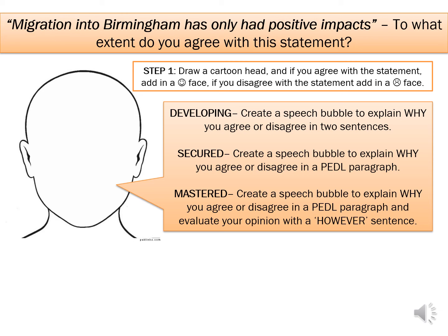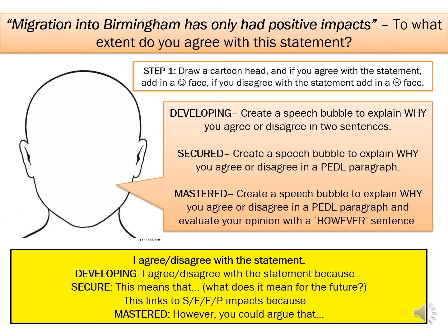For the secure level, create a PEDE paragraph explaining why you agree or disagree: you need a point, an explain, a development ('this means that'), and a 'this leads to' linking it to character. For master level, you must include a 'however' sentence to get those higher grades, as you need to show you can evaluate. At the bottom in the yellow box there are sentence starters for each grade level — developing is grades three to four, secure leads to around grade five or six, and the master sentence starter would give a grade seven or above, provided it links to the original point you have made.